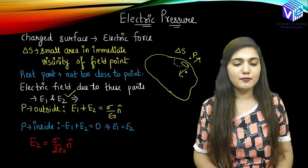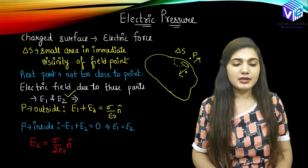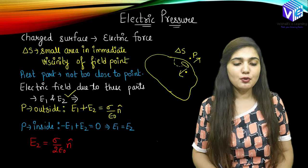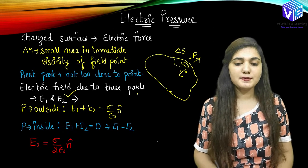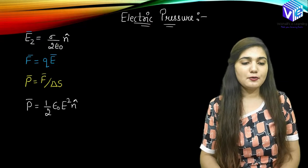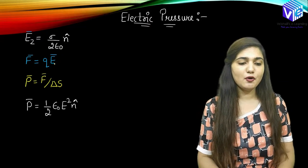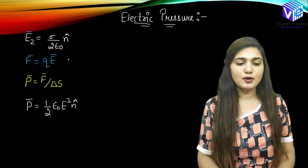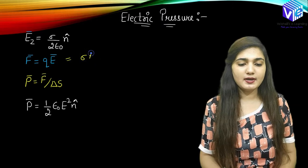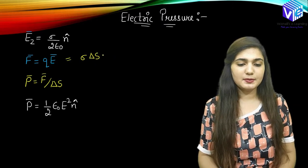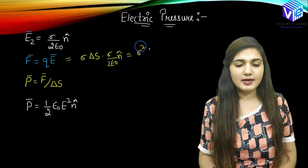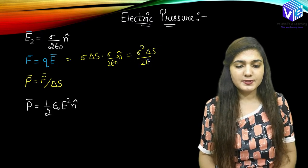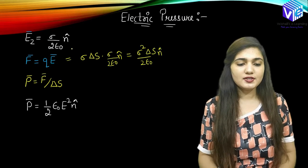So instead of E1, I will be putting minus E1. So minus E1 plus E2 equals 0, which means E1 is directly equal to E2. And now E2 — we know E1 plus E2 equals σ/ε₀. Let's put E1 equal to E2: we get 2E2 equal to σ/ε₀, so E2 will be equal to σ/(2ε₀) n̂. So now we have found out E2 equals σ/(2ε₀). Now, force equals charge into E. So how can I represent charge? Charge will be equal to σ/(2ε₀) n̂. So now force will be equal to σ² ΔS/(2ε₀) n̂. This is how I can get the force.